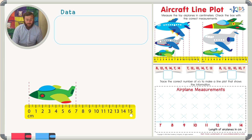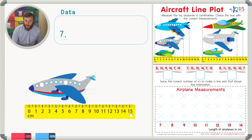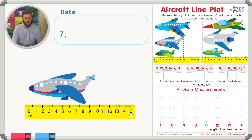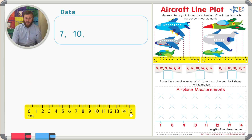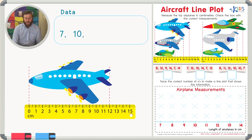The gray airplane starts at zero and ends at 10 centimeters, so it's 10 centimeters long. The final airplane on this side starts at zero and ends at 12 centimeters, so it's 12 centimeters long.